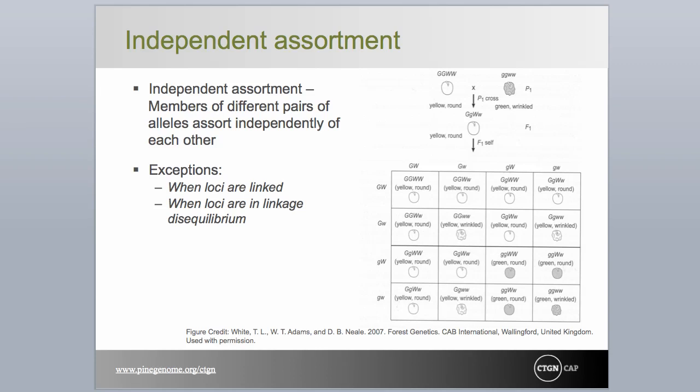Here again, Mendel was rather lucky. The garden pea has seven sets of chromosomes, and the seven traits he selected to work with not only were controlled by single genes, but those genes occurred on separate chromosomes. Of course, there are important exceptions to the rule of independent assortment. When genes occur in close proximity to each other on the same chromosome, they tend to be genetically linked. A separate, though not entirely unrelated, condition called linkage disequilibrium may also violate the rule of independent assortment. We will discuss each in much greater detail in later modules, as they are the foundation for things like genetic maps and association genetics, respectively.